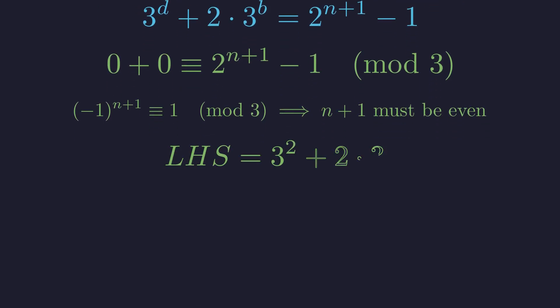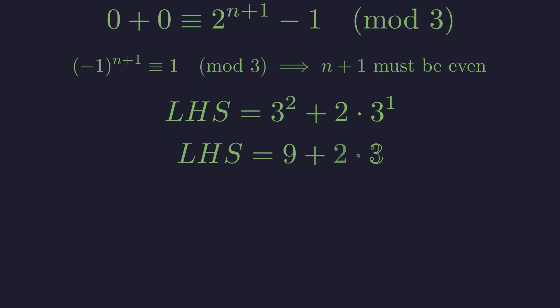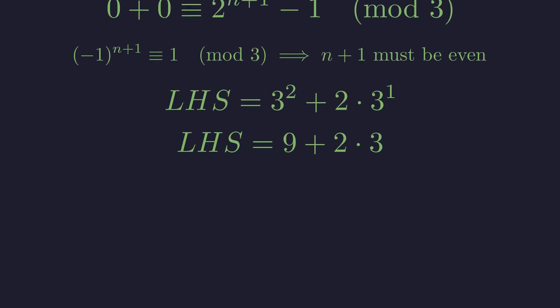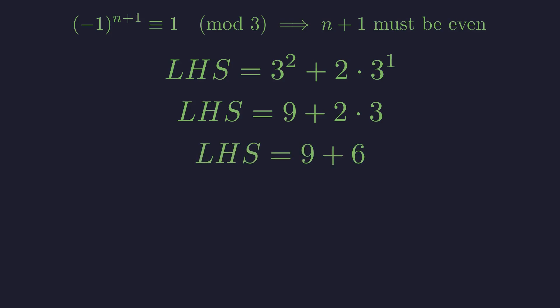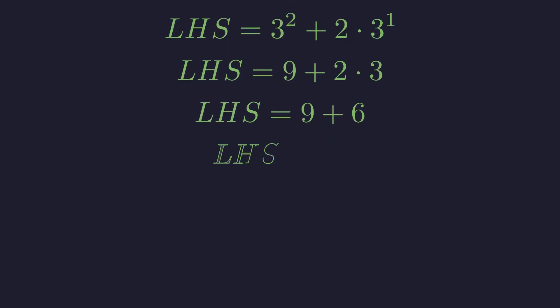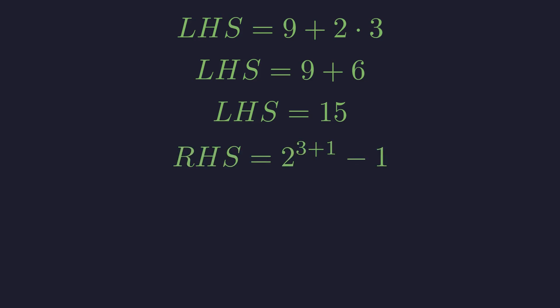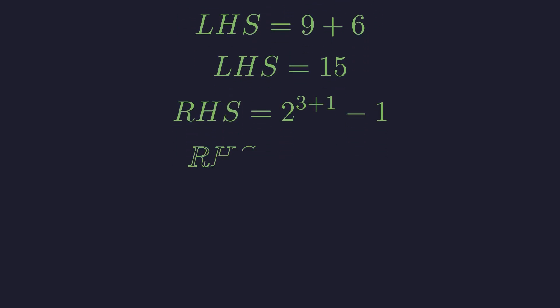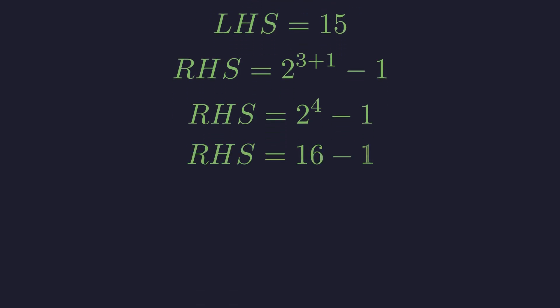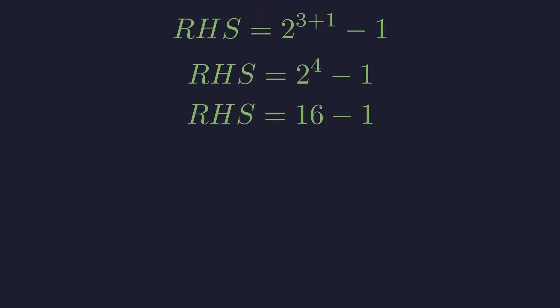We verify by substituting b equals 1 and d equals 2 into the left-hand side. The powers evaluate to 9 and 3. The multiplication yields 6, and the sum is 15. The right-hand side with n equals 3 is 2 to the 4th power minus 1. This is 16 minus 1, which equals 15. The solution is confirmed.